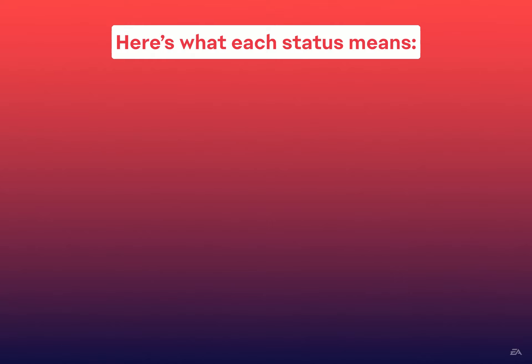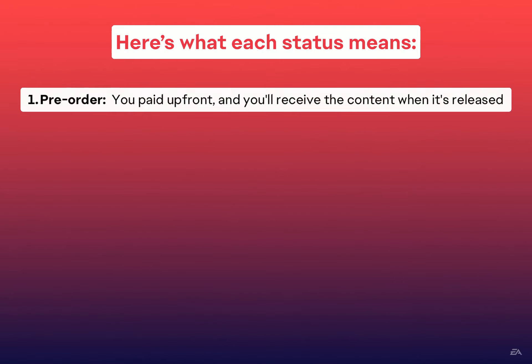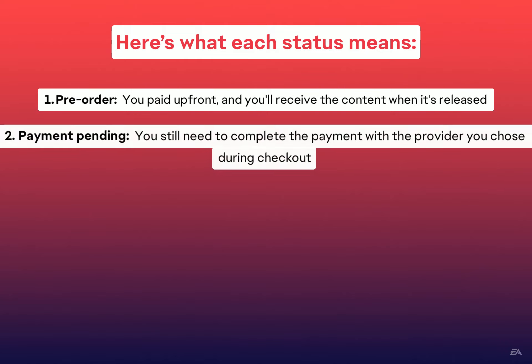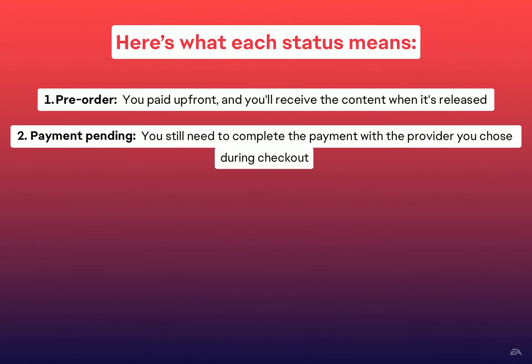Here's what each status means. Pre-order: you paid upfront and you'll receive the content when it's released. Payment pending: you still need to complete the payment with the provider you chose during checkout.